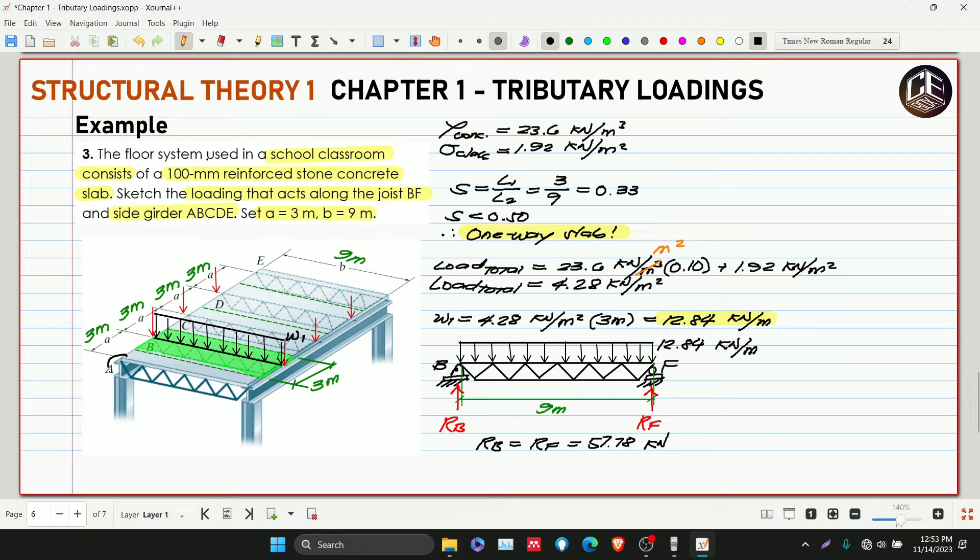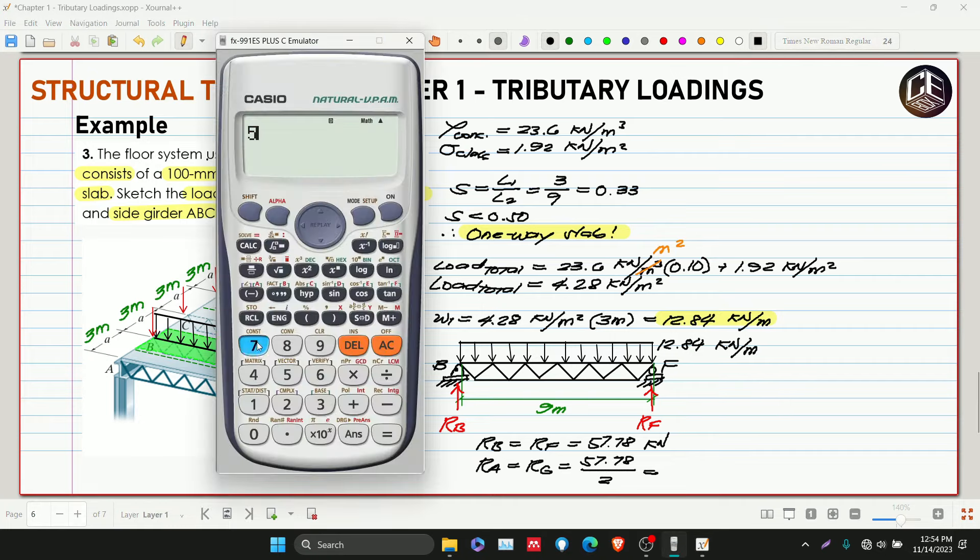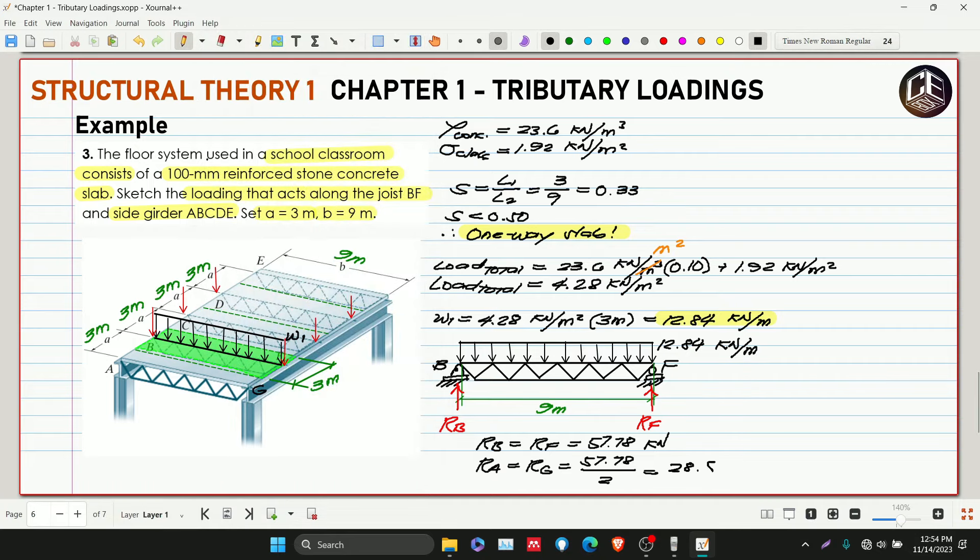What this joist will receive - let's say joist AG compared to what BF or the internal joists receive - the edge joist AG receives only half the loading compared to interior joists. Since the loading is half, the reaction at A and G is also half of the reaction at B and F.